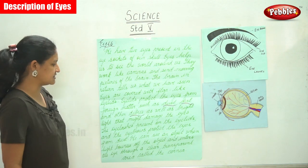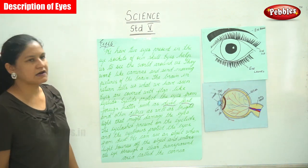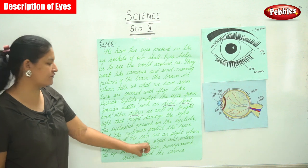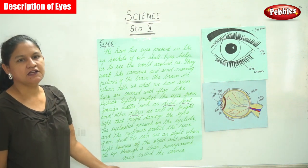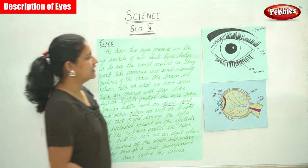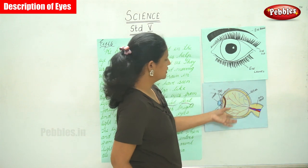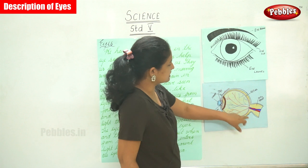We can see an object when light bounces off the object and enters the eye through a clear, transparent area called the cornea. The picture of the eye shows its parts: the retina, the optic nerve, the cornea, the iris, the pupil, and the lens.